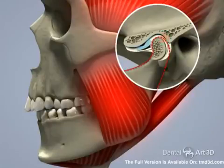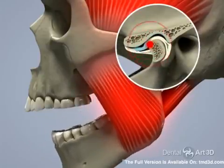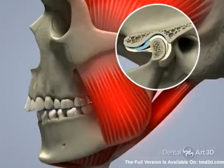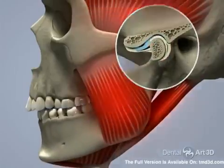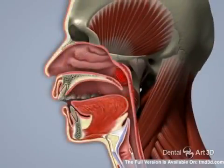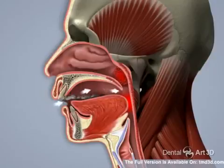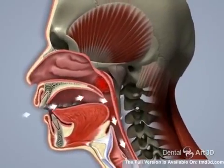As a result, the TMJ disc can get trapped in front of the condyle. While the click may go away, limited mouth opening will occur. A distally shifted jaw and tongue position result in even further restriction of the airway. In order to open up the airway, the neck moves forward and the head tilts backwards.